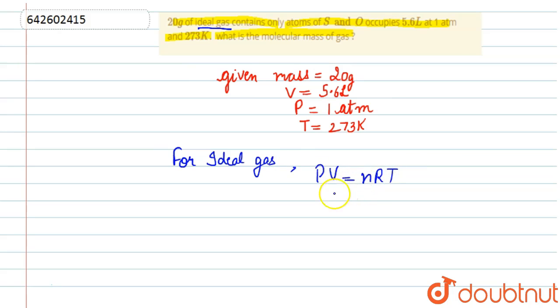In this equation PV equals nRT, P is the pressure, V is the volume in liters, pressure is in atmosphere, n is the number of moles, R is the gas constant, and T is the temperature in Kelvin.